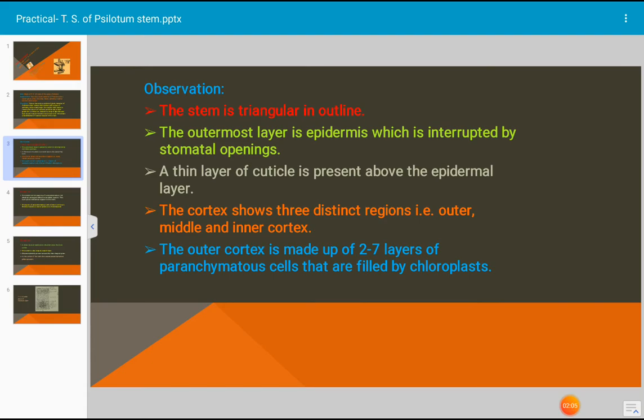A thin layer of cuticle is present above the epidermal layer. The cortex shows three distinct regions. The cortex is placed below the epidermal layer and is divided into three parts: outer cortex, middle cortex, and inner cortex.